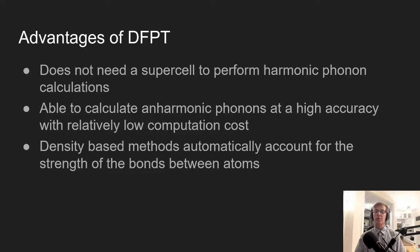Since it's a density based method, it automatically accounts for the strength of the bonds between the materials, which means that there's no exceptions made for either ionic, covalent, or metallic bonding.